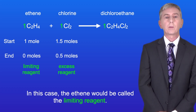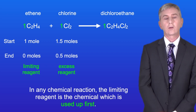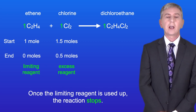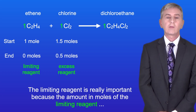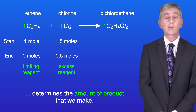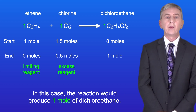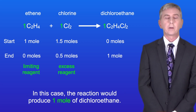In this case the ethene would be called the limiting reagent. In any chemical reaction the limiting reagent is the chemical which is used up first. Once the limiting reagent is used up the reaction stops. The limiting reagent is really important because the amount in moles of the limiting reagent determines the amount of product that we make. In this case the reaction would produce one mole of dichloroethane.